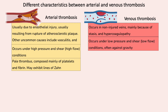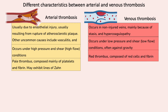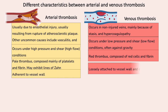Venous thrombosis, in contrast, occurs under low pressure and low flow conditions, giving time for red cells to sediment and be trapped within the fibrin network. Therefore, venous thrombi tend to appear red and soft as compared to arterial thrombi, which are pale and firm.